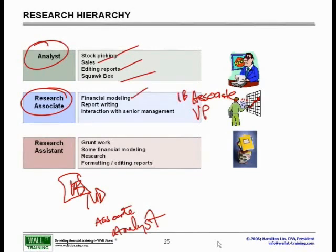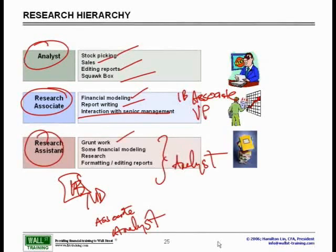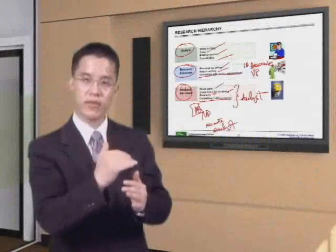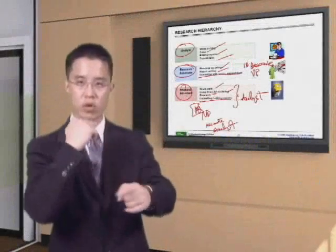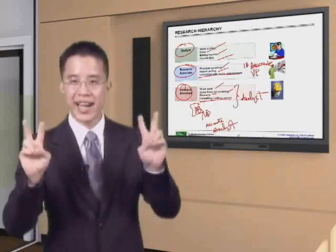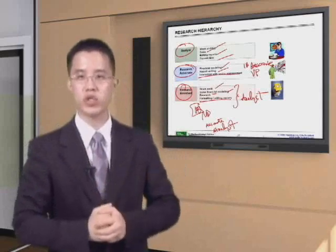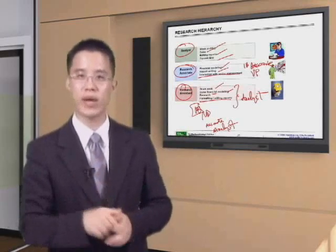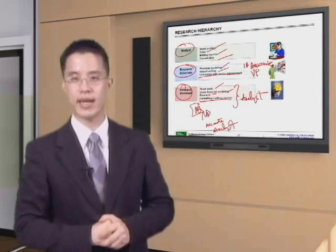The Research Associate is the middle level, roughly equivalent to an investment banking associate-to-VP level. They write the reports, create the financial models, and interact with senior management. The Research Assistant is akin to an investment banking analyst — they do the groundwork, some financial modeling, research, and format and edit reports. The titles are reversed compared to investment banking, so always be careful to understand the context when someone uses the title 'analyst.'